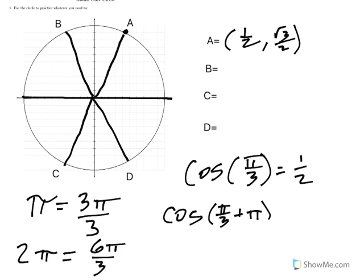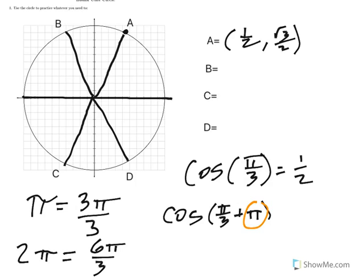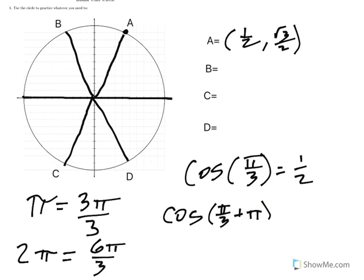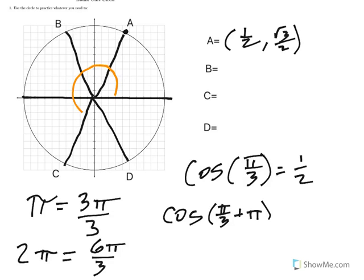But if I think about π as one-half of a revolution, then it's possible to say, well here's π/3 plus half of a revolution.